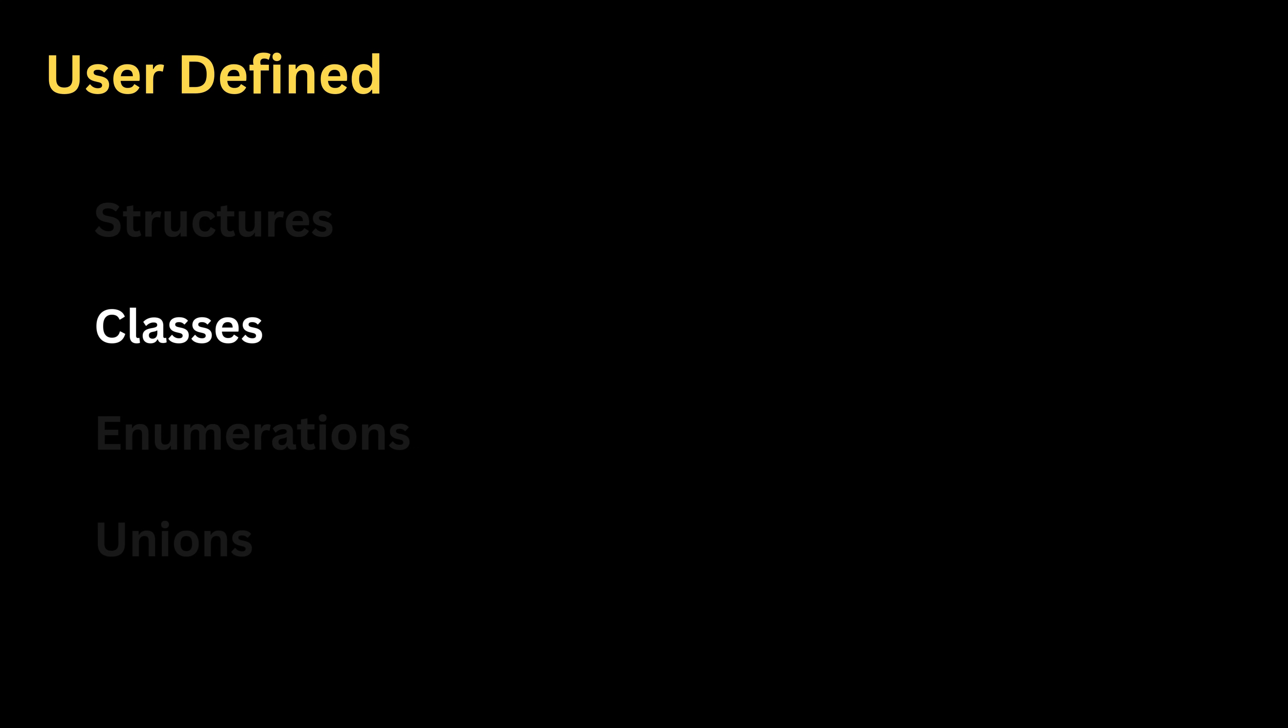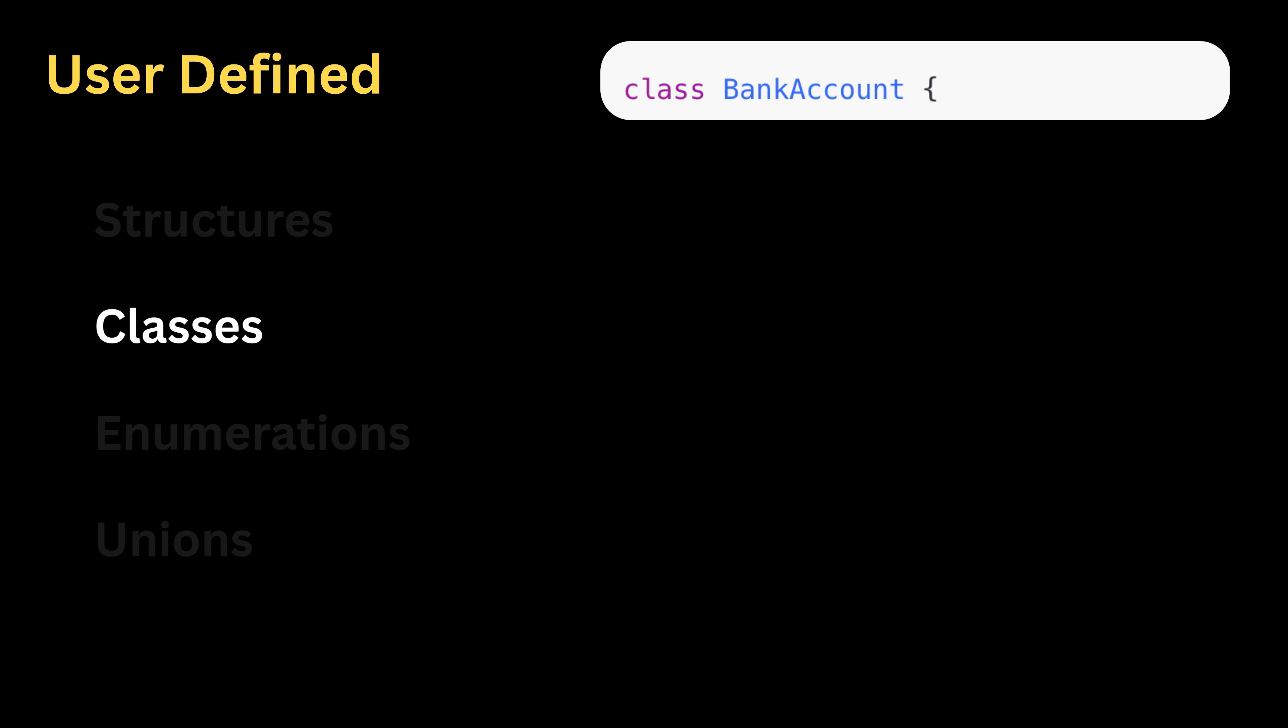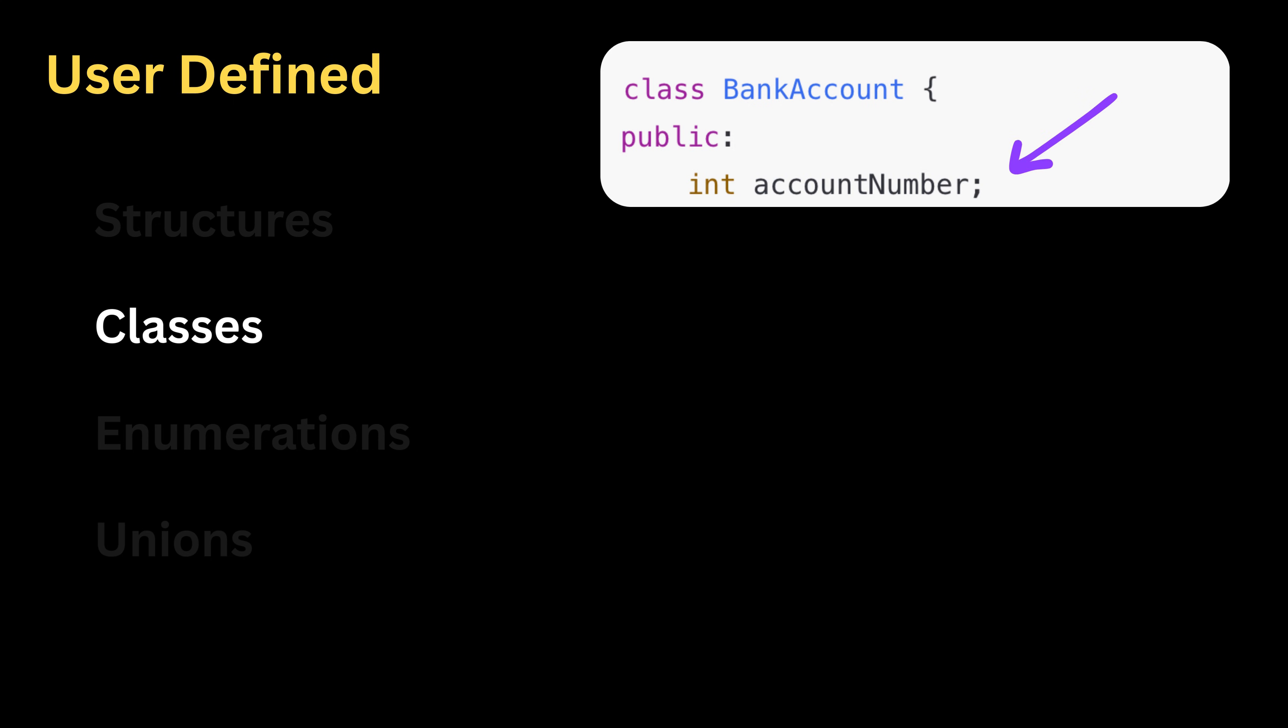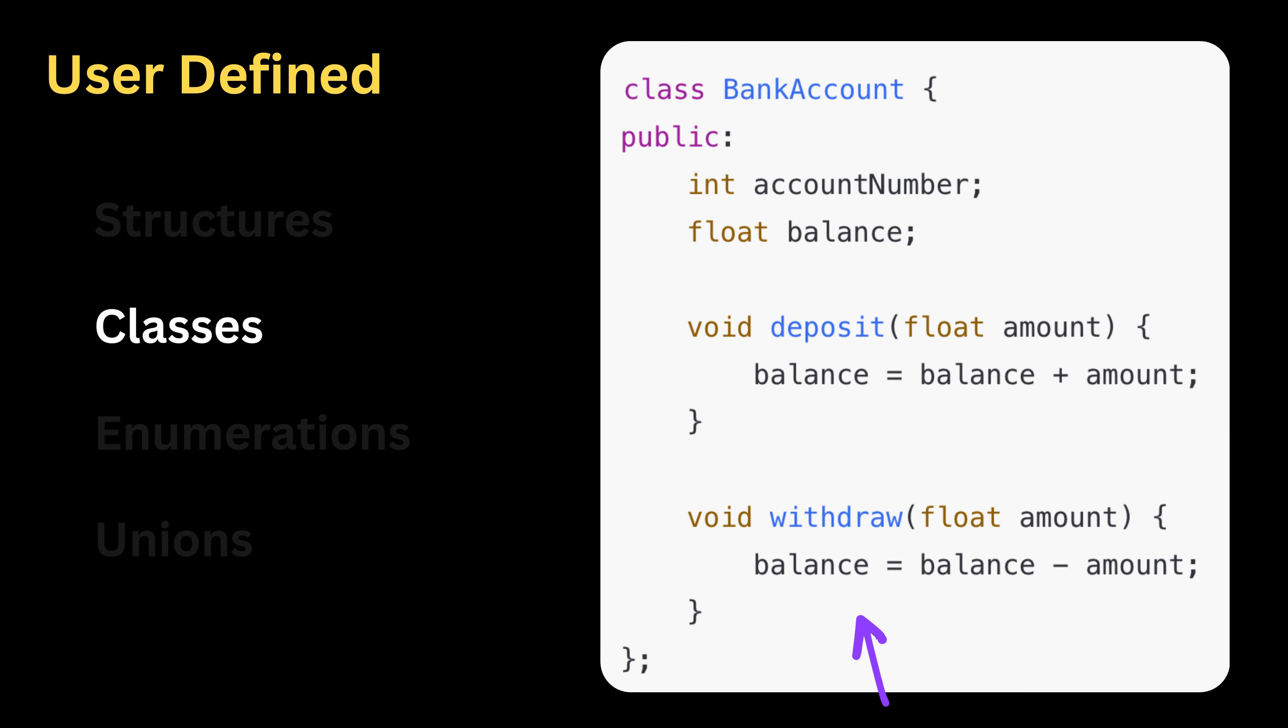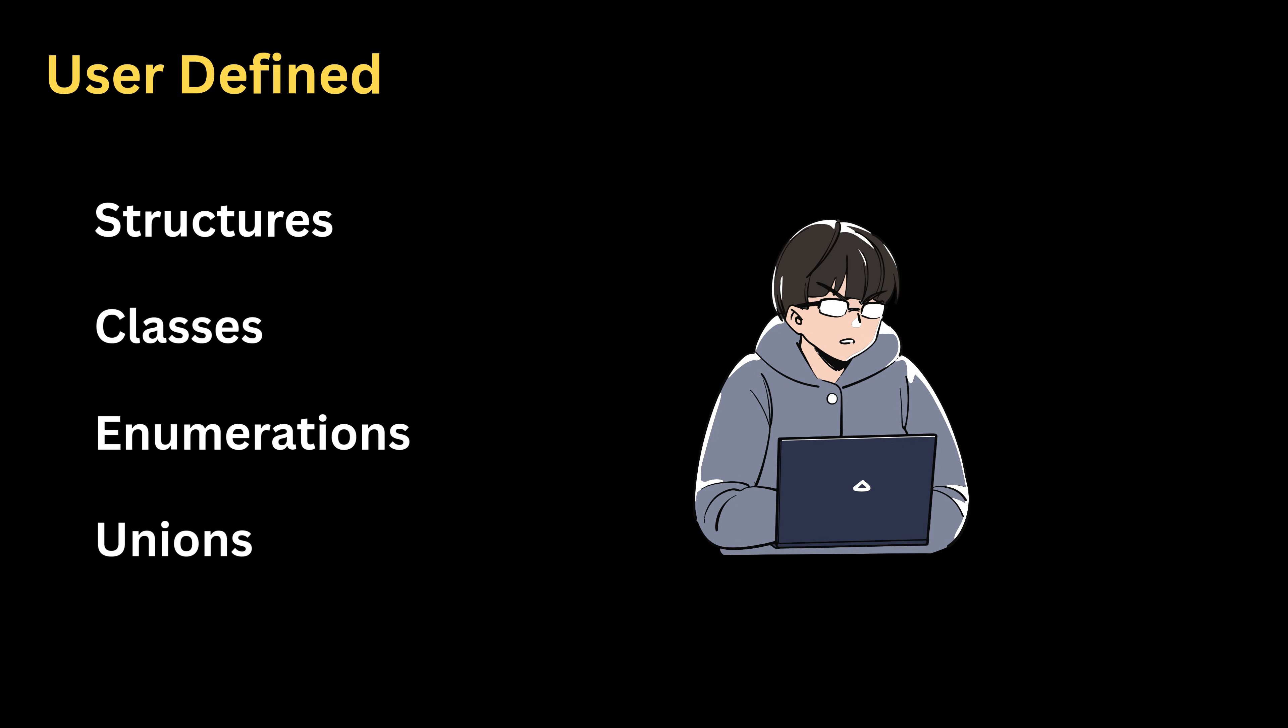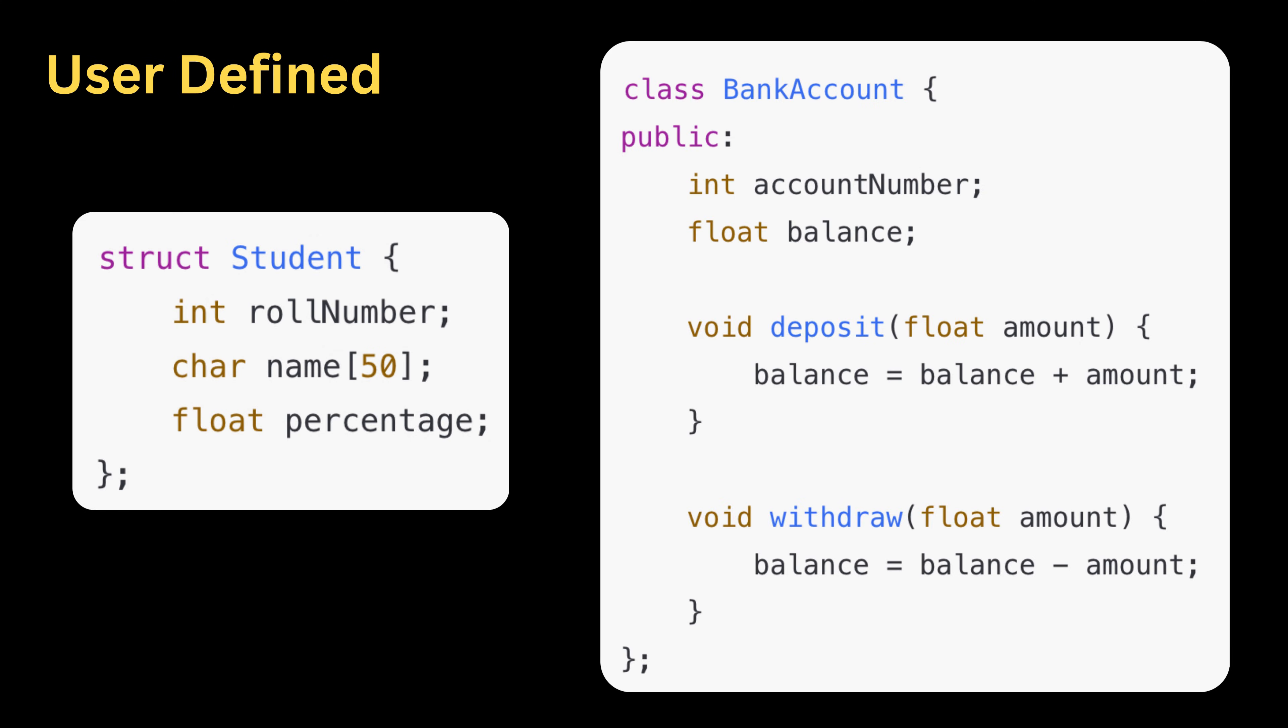A class is very similar, but it goes one step further by allowing functions inside it that can act directly on the stored data. For example, if we make a class called bank account, we may keep fields like an integer for account number and a real number for balance, and also include functions like deposit and withdrawal to update the balance. In this way, a class not only stores data but also controls how that data is used. These user-defined data types allow us to design more meaningful models while still depending on simple building blocks like integers, characters, strings, and boolean values.